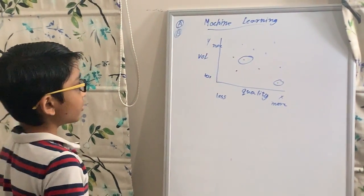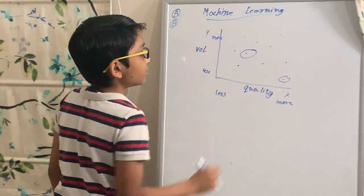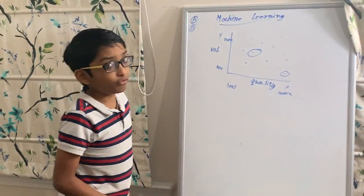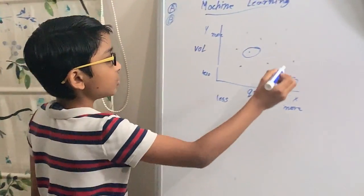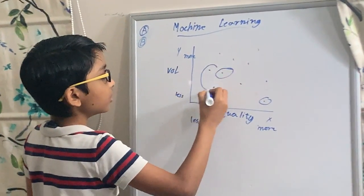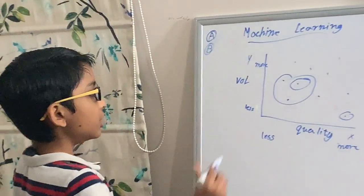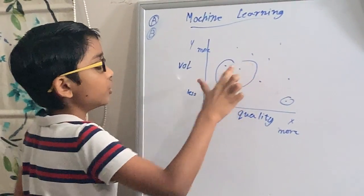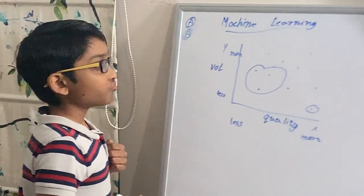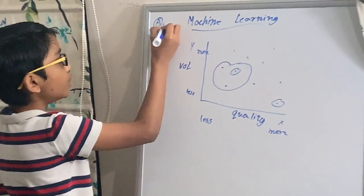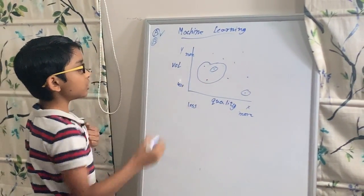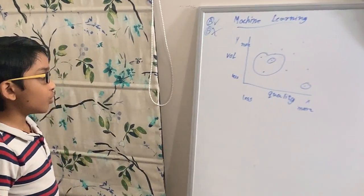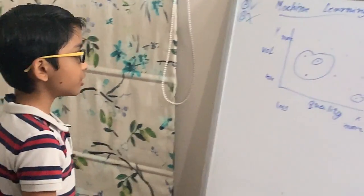The machine learns by the data provided and will predict whether this is wanted or not. One way we might look at this: setting B is closer to medium volume and less quality. Since it's not near the ones the user likes, this is not a wanted option. We want A, but since B is closer to less quality, it is not chosen. The way the machine learns this is by an algorithm — whenever you train a machine, you need to provide it an algorithm to give the desired output.